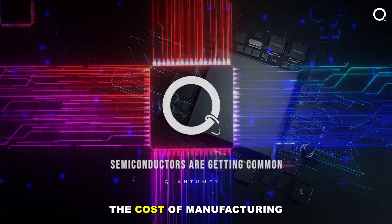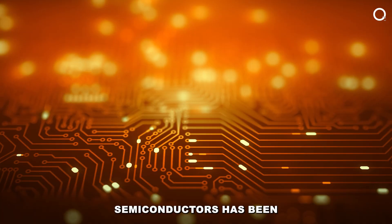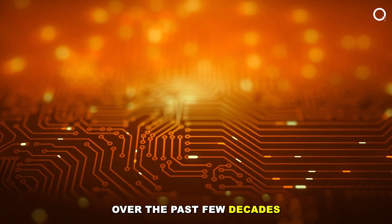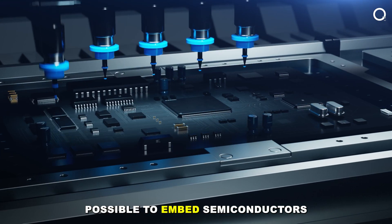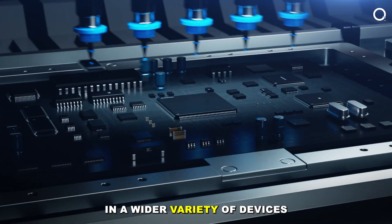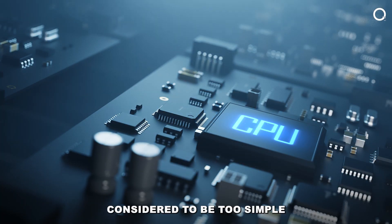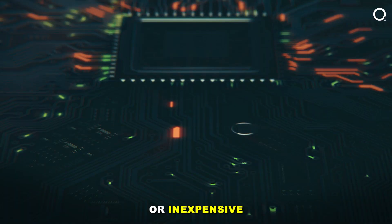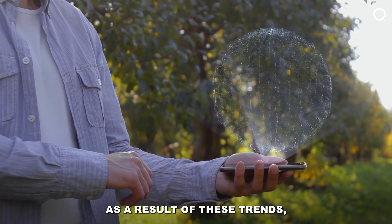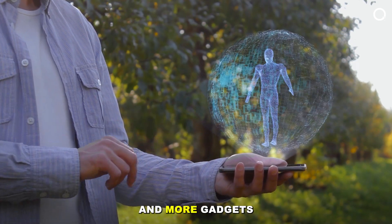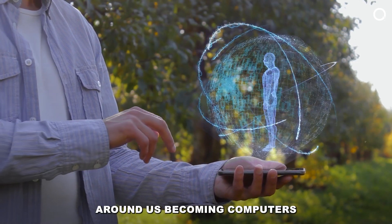Semiconductors are getting common. The cost of manufacturing semiconductors has been decreasing steadily over the past few decades. This has made it possible to embed semiconductors into a wider variety of devices, including those that were previously considered to be too simple or too inexpensive to warrant a computer chip. As a result of these trends, we are seeing more and more gadgets around us becoming computers.